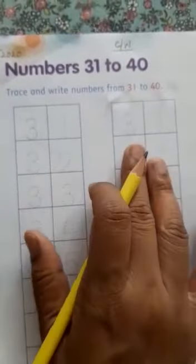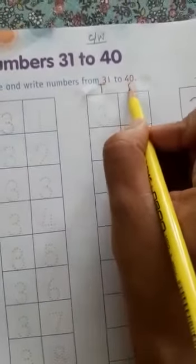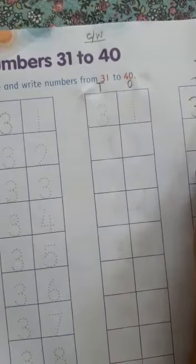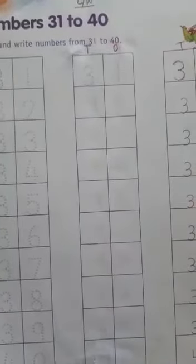Then, when you will write 31 to 40 in your workbook, what are you going to do? First, you will write here tens and here ones. And then you will start writing 31 to 40.